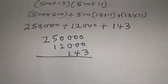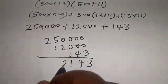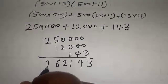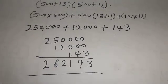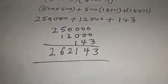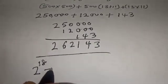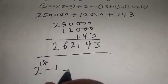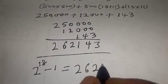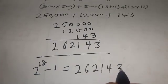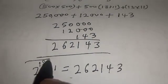Now this is 143, 12,000, 262,143. So our final answer is 2 raised to the power 18 minus 1 without using calculator is equal to 262,143. That is our final answer.